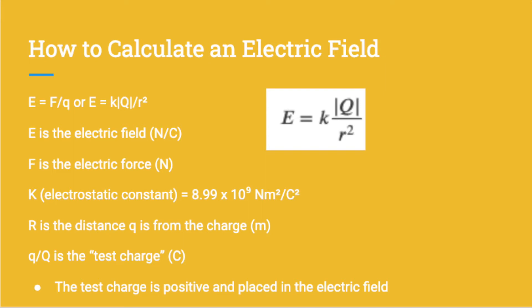K is the electrostatic constant, and it's equal to 8.99 times 10 to the 9 Newton meters squared over Coulomb squared. E is the electric field, and F is the electric force. E is measured in newtons over Coulomb, and F is measured in newtons. R is the distance Q is from the charge, measured in meters. And Q is the test charge, which is a positive charge that is placed in the electric field.